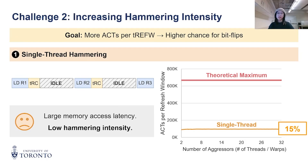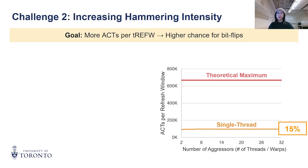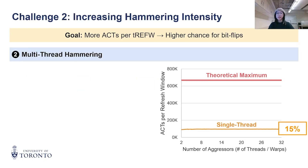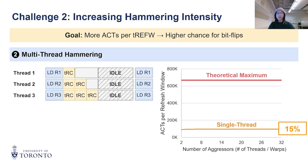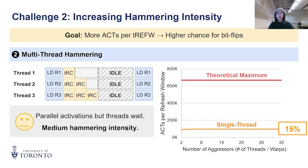So what can we do? A natural improvement is to use multiple threads. With multiple threads, memory requests can be issued in parallel, effectively overlapping delays and improving throughput.